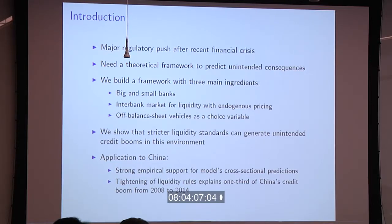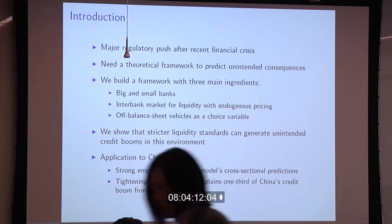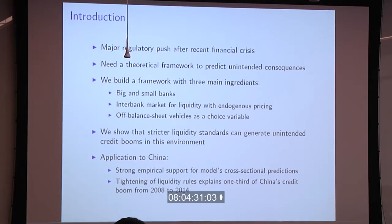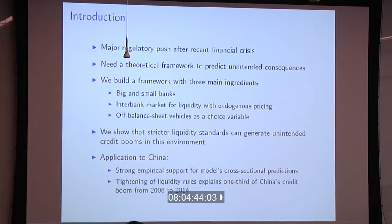If you set up a fairly simple model with these three ingredients, you can get liquidity regulation having exactly the opposite of its intended effect. Usually when a regulator imposes a liquidity minimum, the idea is to have banks hold more assets that can be converted into cash easily and less long-term lending. We show that imposing minimum liquidity standards in a world with these three features actually produces the opposite: an increase in credit relative to savings instead of a decrease.